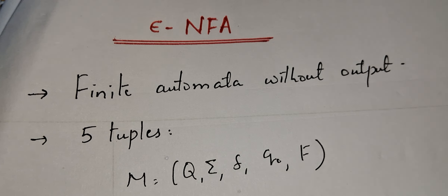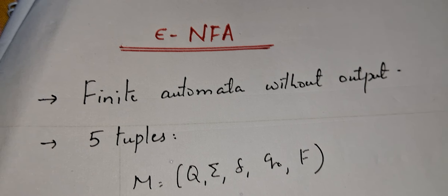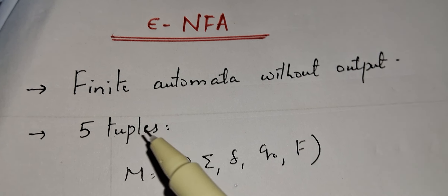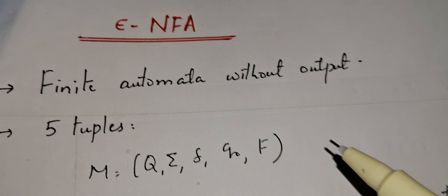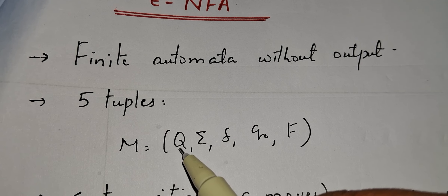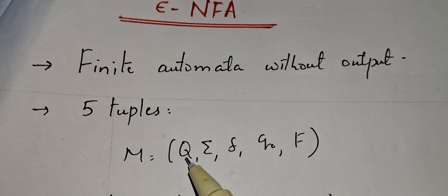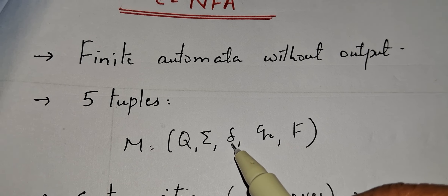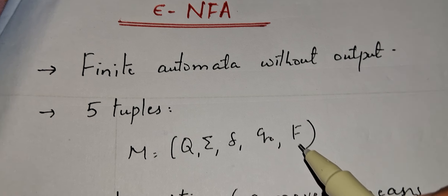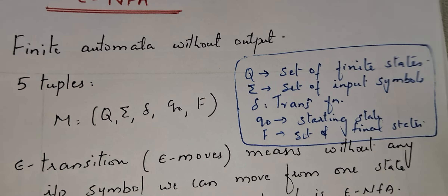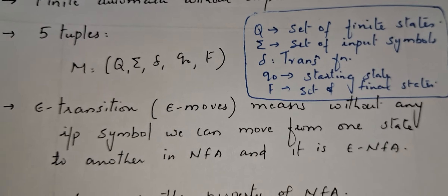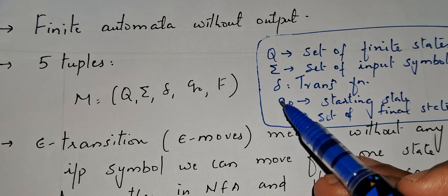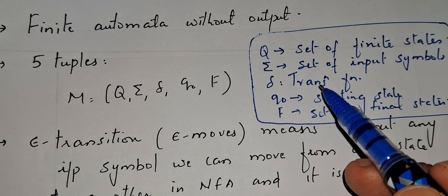Like DFA and NFA, epsilon NFA also consists of five tuples: Q, Sigma, delta, q0, and F. Q is the set of finite states, Sigma is the set of input symbols, delta is the transition function, q0 is the starting state, and F is the set of final states. In DFA and NFA these components are the same — there is only a change in the transition function.